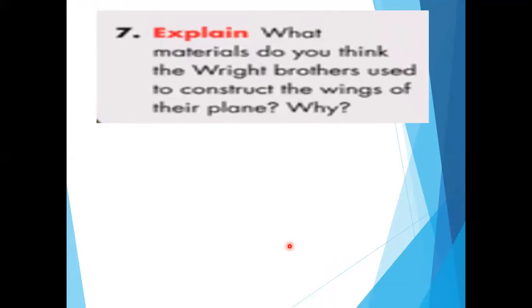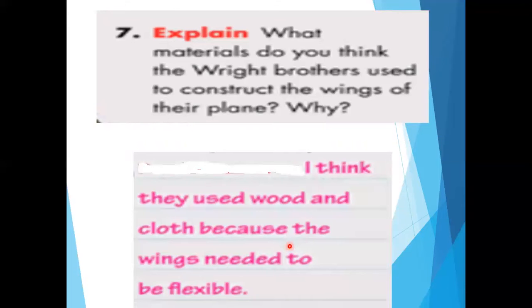Question number seven: What materials do you think the Wright brothers used to construct the wings of their plane and why? The answer is: I think they used wood and cloth because the wings needed to be flexible. Thank you, my dear students, for your listening. Tomorrow we will complete our lesson, insha'Allah.